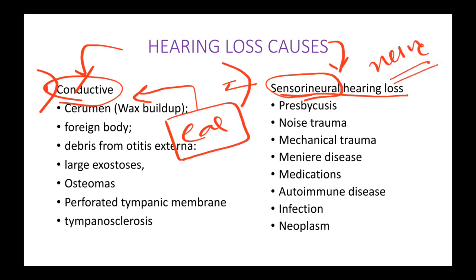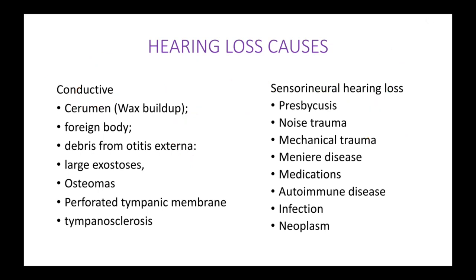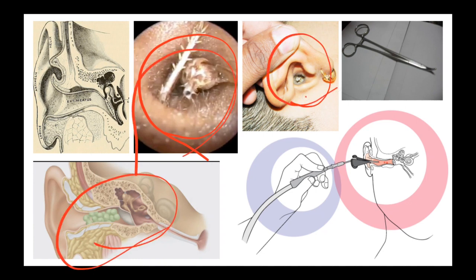The nerve that supplies the ear is the eighth cranial nerve — the vestibulocochlear cranial nerve. Any damage to this nerve leads to sensorineural hearing loss. Ear conditions causing conductive hearing loss could include any kind of foreign bodies in the ear, such as wax, insects, peas, or vegetables.